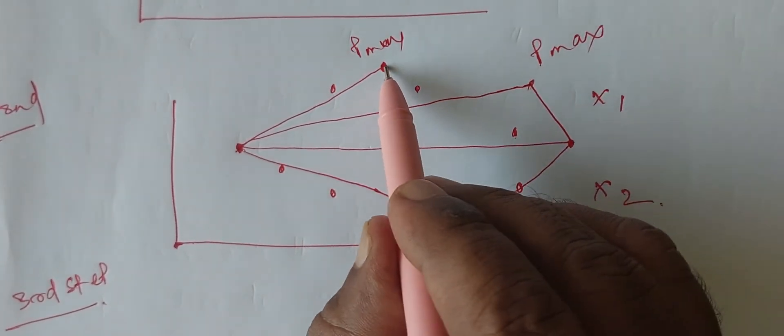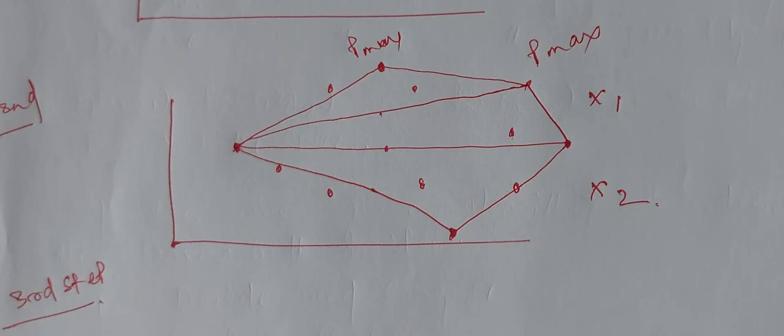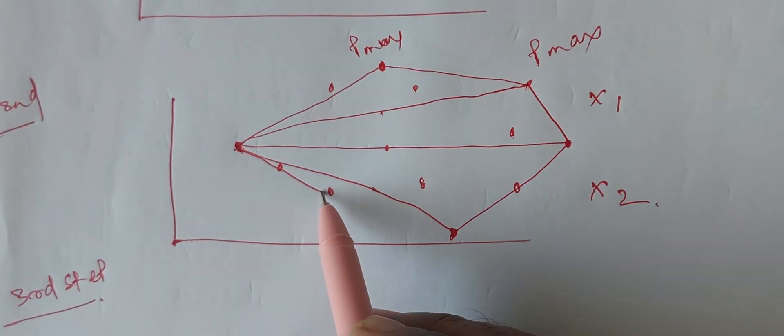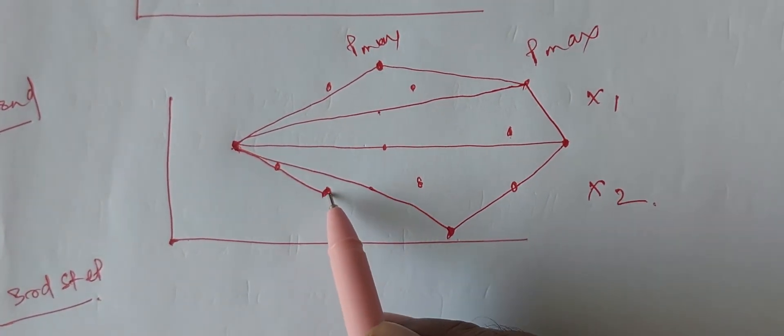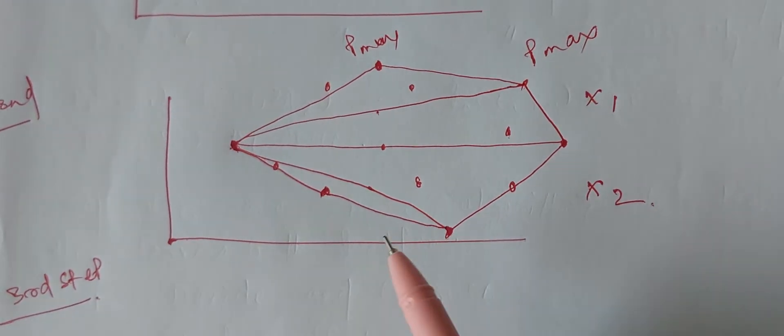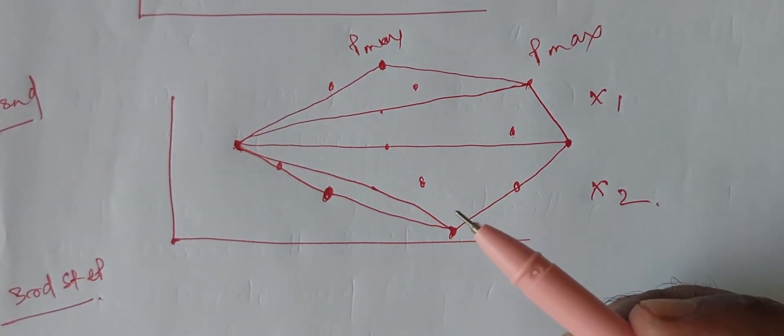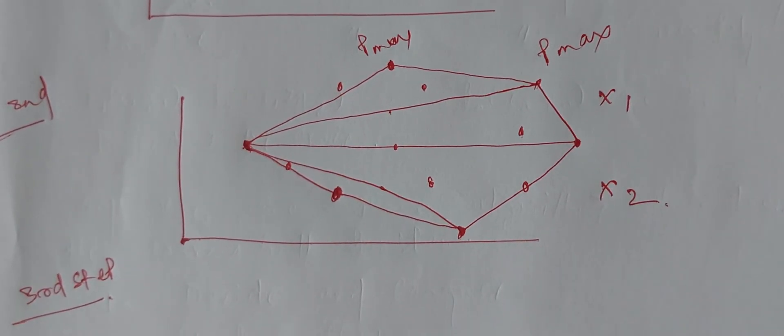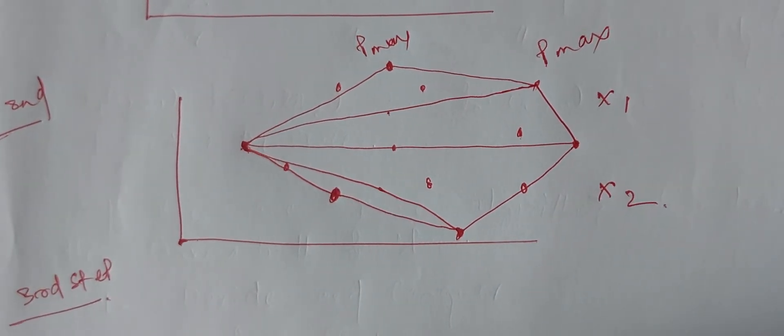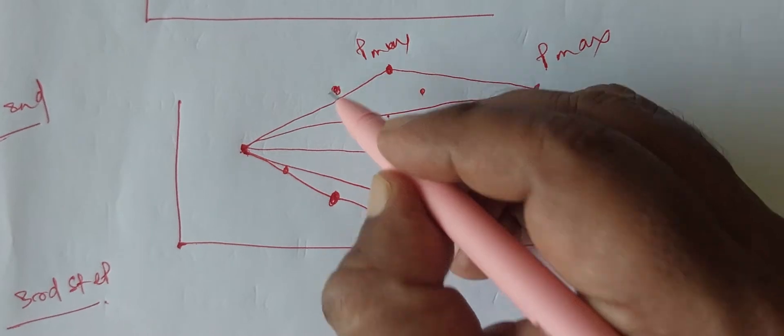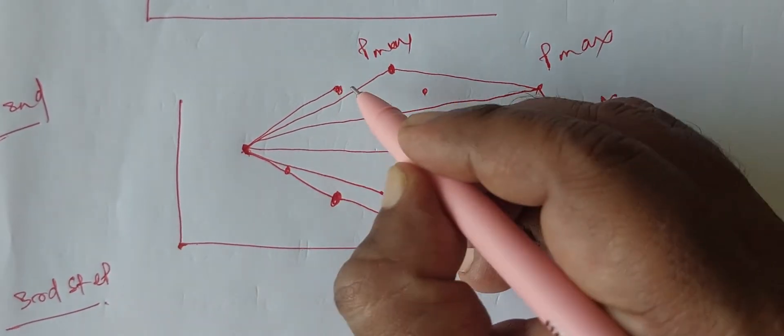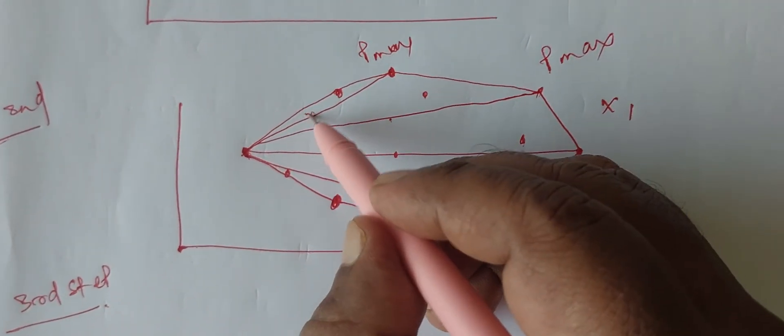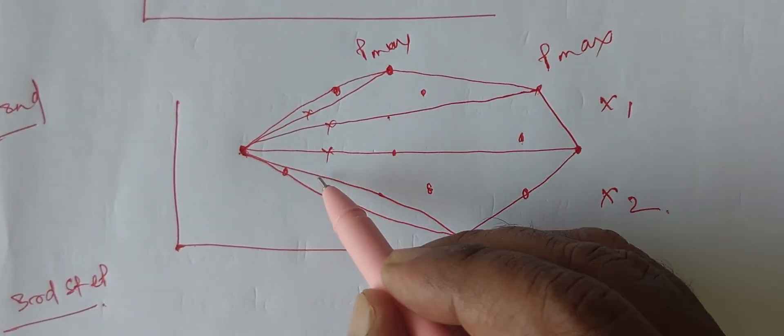Again, we will consider it Pmax and then we will connect here. Similarly, at this point, we will connect this point because of largest distance. And after that, I will check which points are still outside. If this point is still outside, then I will again connect it to here so that these previous lines will be removed.